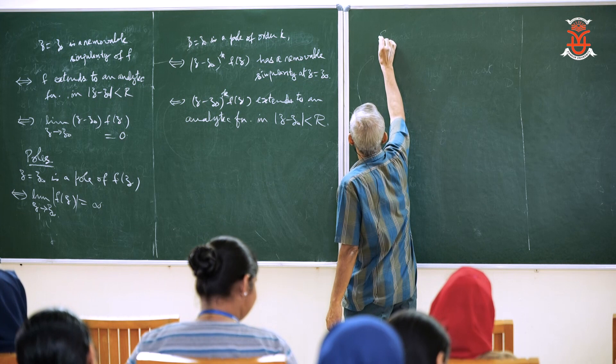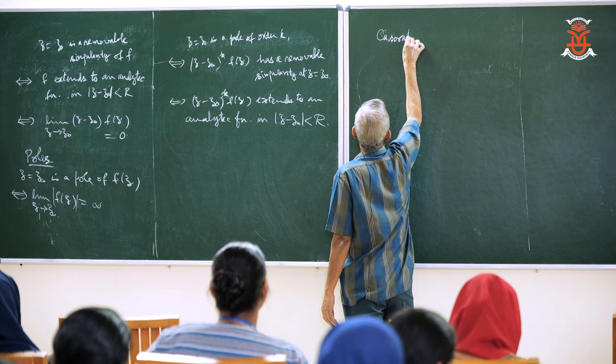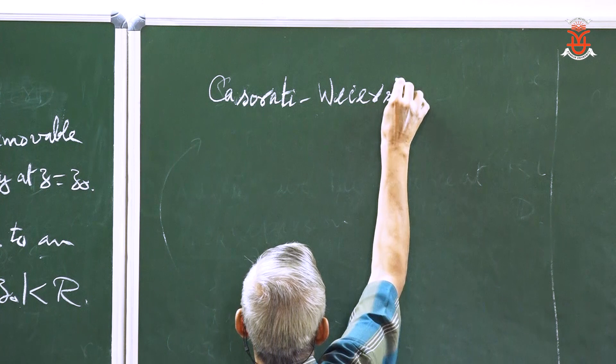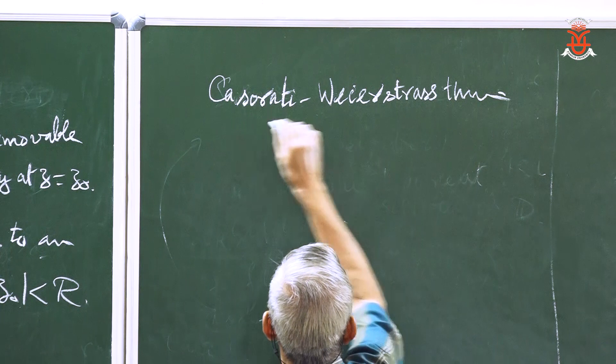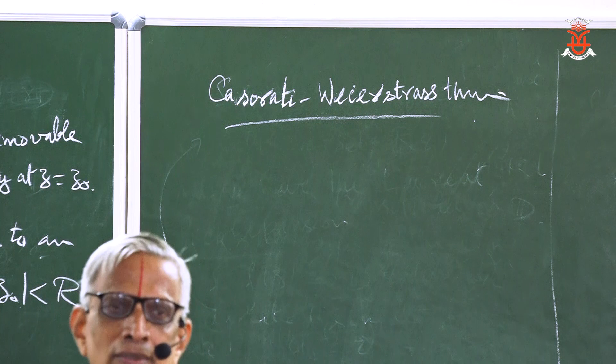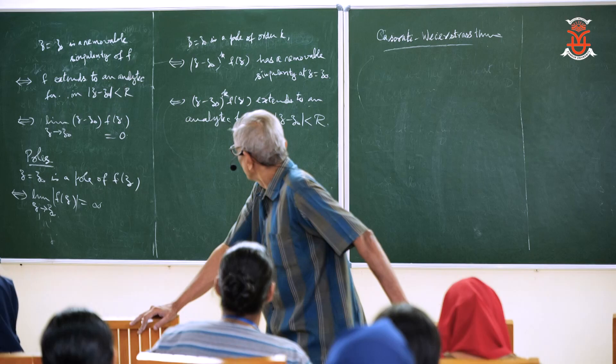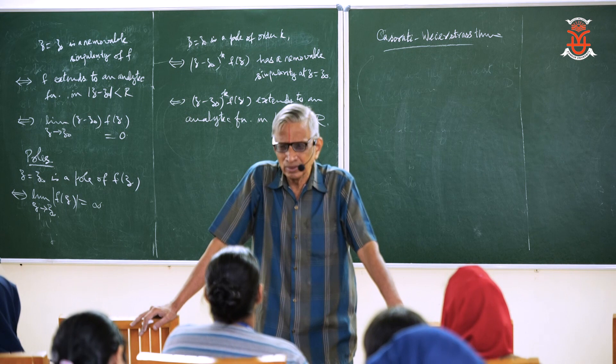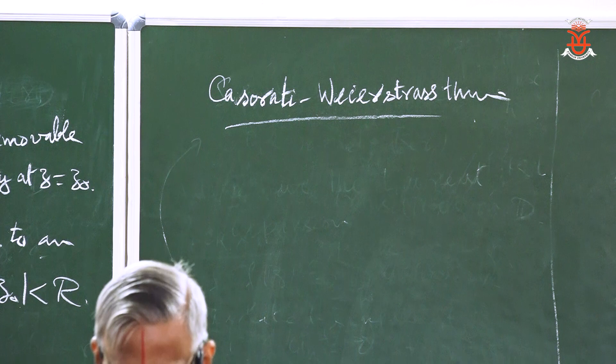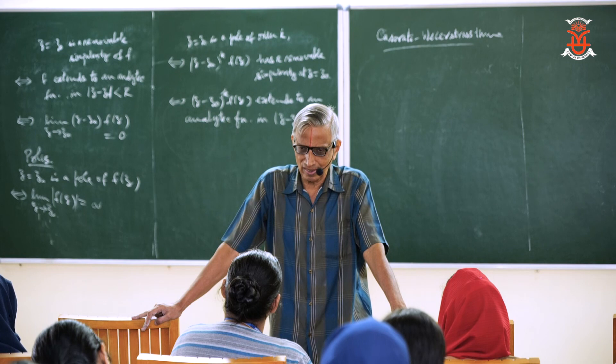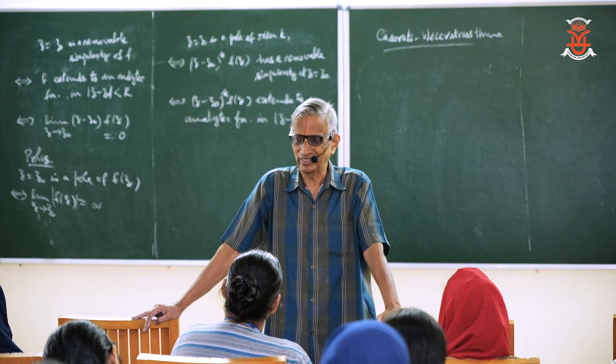The Casorati-Weierstrass theorem — Casorati was probably an Italian mathematician who proved it around 1868, and Weierstrass proved it independently sometime later around 1875 in his lectures.